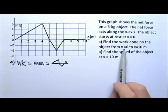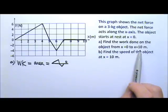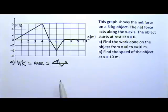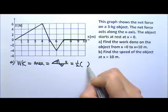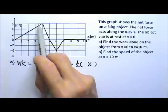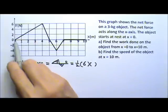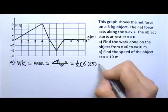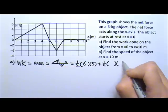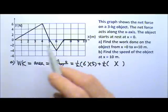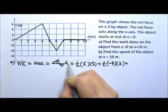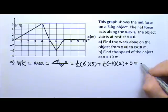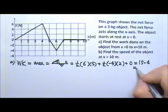Since we're going from x = 0 to x = 10, the displacement is in the positive x direction. When the force is positive we get positive work; when the force is negative we get negative work. The positive area is a triangle with height 6 and base 5, giving ½(6)(5) = 15. The smaller triangle has height −4 and base 2 (from x = 5 to x = 7), giving ½(−4)(2) = −4. There is no area from x = 7 to x = 10. Total work = 15 − 4 = 11 joules.